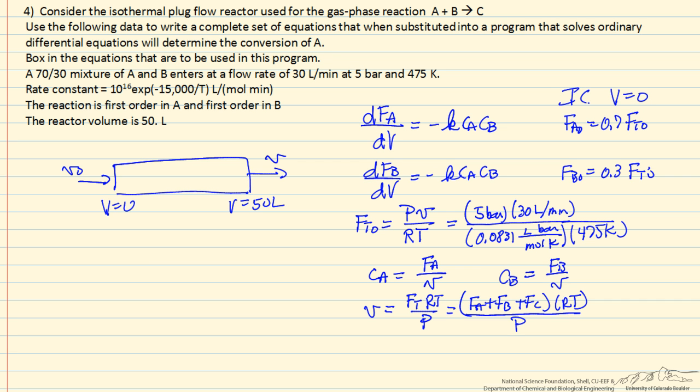Well, how do we get Fc? There's several ways, but the easiest is just to write a differential equation for Fc. This is K times concentration of A times concentration of B, where this is a plus sign. And of course, we need initial conditions that Fc is equal to zero initially.